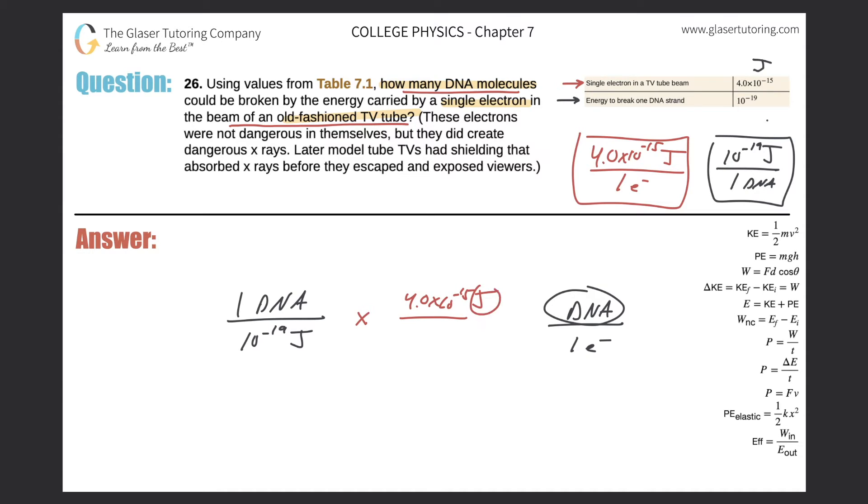Notice the joules will cancel. Look at that. There they go. And the one electron is in the denominator. And now notice I have the unit DNA in the numerator here, and then I have electron in the denominator. So guess what? When I perform this operation now, I'll get my answer.